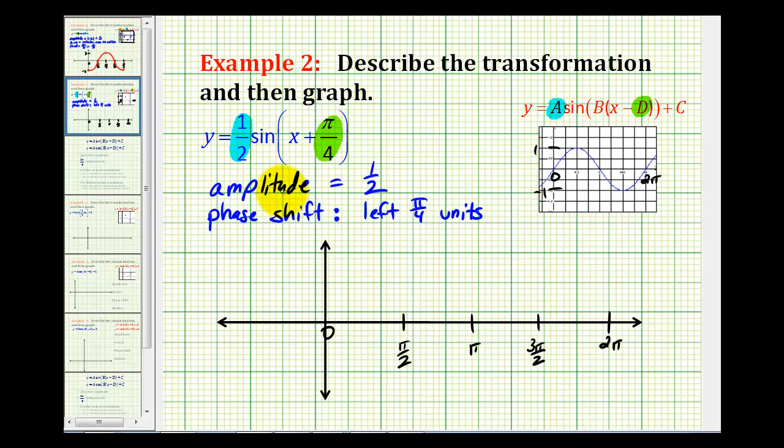Normally we would graph it from zero to two pi and then divide this interval into fourths, but since this graph is shifted pi over four units to the left, instead of graphing one period from zero to two pi radians, we'll graph it from negative pi over four all the way to two pi minus pi over four. Two pi is the same as eight pi over four. Eight pi over four minus one pi over four would be seven pi over four.